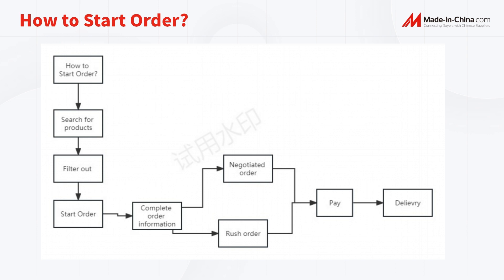Search for the projects you want to order. Fill out secured trading service projects on the page. Click the Start Order button. Complete the order information. There are two kinds of orders: the Negotiated Order and the Rush Order. We will introduce them later.